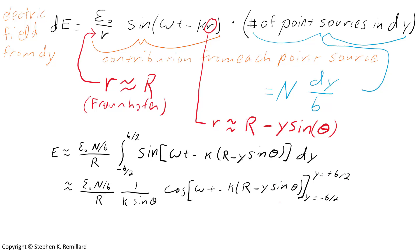And evaluate that result from y equals minus b over 2 to y equals plus b over 2. Invoke the trig identity that cosine of two arguments added together, where u is omega t minus k big R, and v is k b over 2 sine of theta. These are things you will see when you perform this evaluation. When you use this trigonometric identity to perform this evaluation, you will end up with four terms, two of which cancel, and two of which are identical, and I'll write the result. This is the two that accounts for the fact that we have two surviving identical terms.